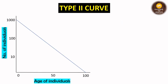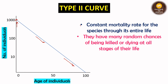The Type 2 curve shows a steady diagonal decline — the number of individuals in early age is very high, then it declines through the middle and continues declining to the end. This represents a constant mortality rate throughout the species' entire life, because of random chances of being killed or dying at all stages. They do not have a specific age at which they die; they can die at any time at any stage.